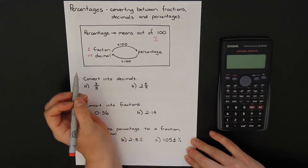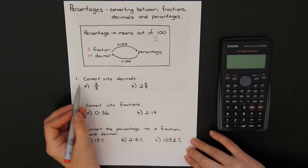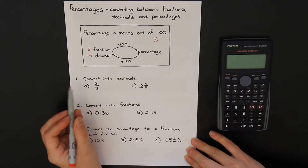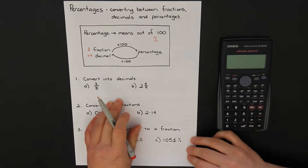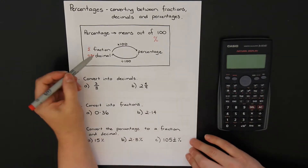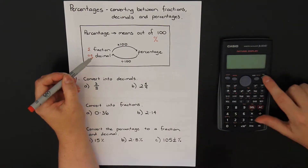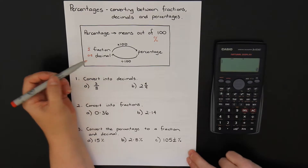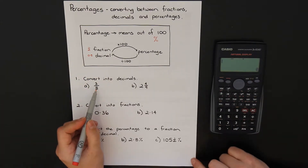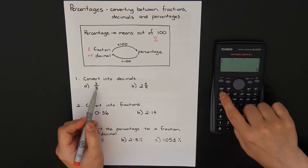Here are a few questions. Convert these fractions into decimals — we're not actually doing any percentages yet, just practicing going between the fraction and the decimal. Using your calculator, hopefully a scientific calculator, type the fraction 3 over 8 into your calculator. On my calculator, the fraction button is right here.